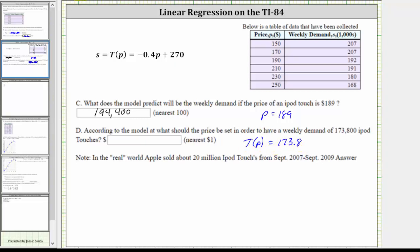So we substitute 173.8 for T of P, and then solve for P. So performing this substitution, we would have 173.8 equals negative 0.4 P plus 270. This is a linear equation. To solve for P, we subtract 270 on both sides.